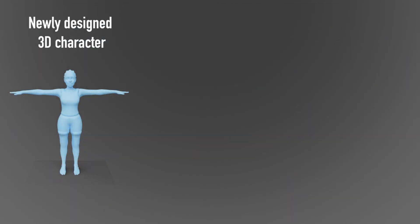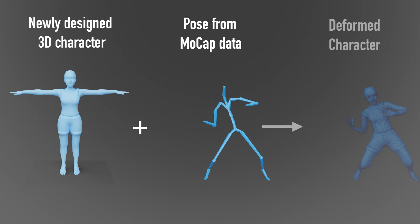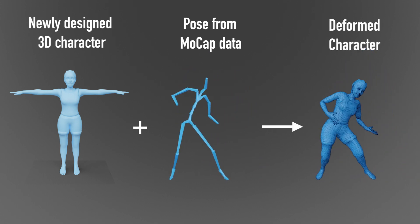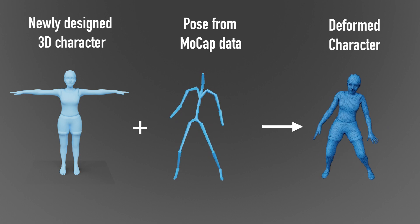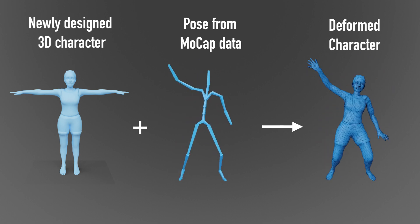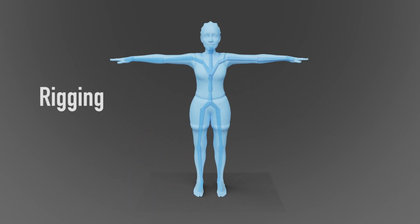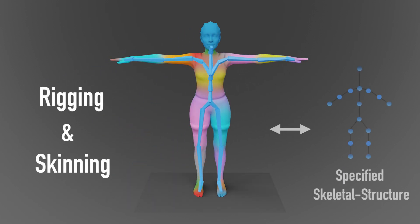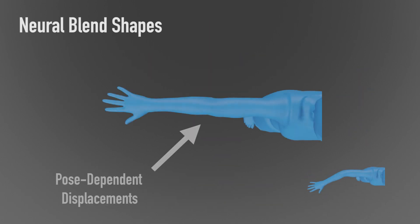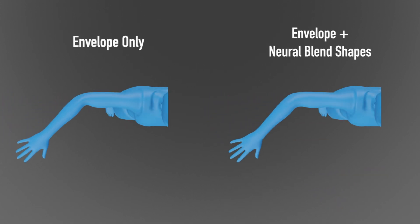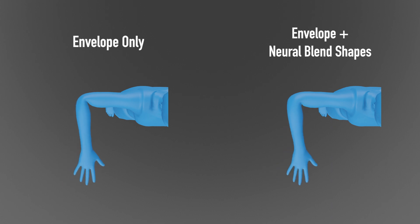We present a framework that makes the mocap to deformation process simple. Our method can rig and skin new characters with a specified skeletal structure, and generate neural blend shapes — a set of residual and pose-dependent displacements. The blend shape refinement results in high-quality deformations, which are especially important in the joint regions.